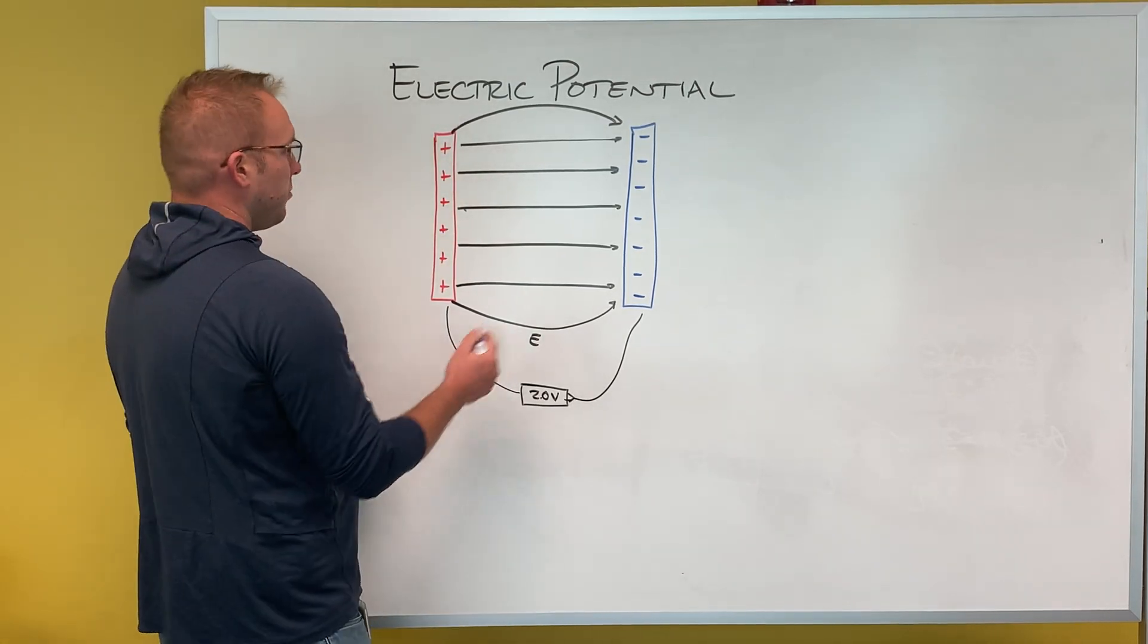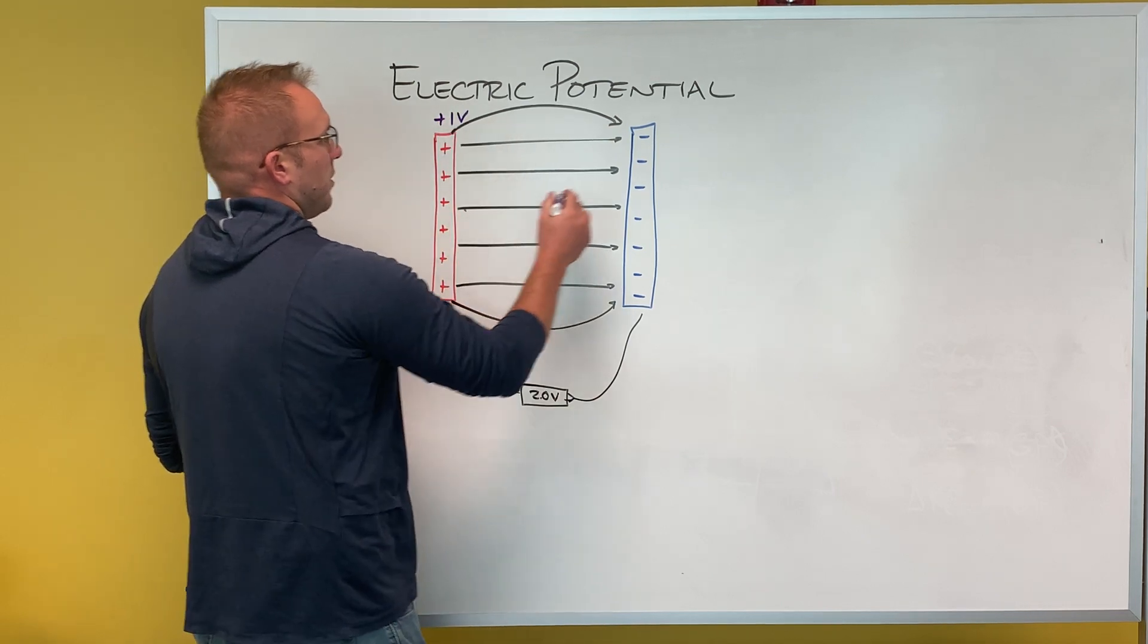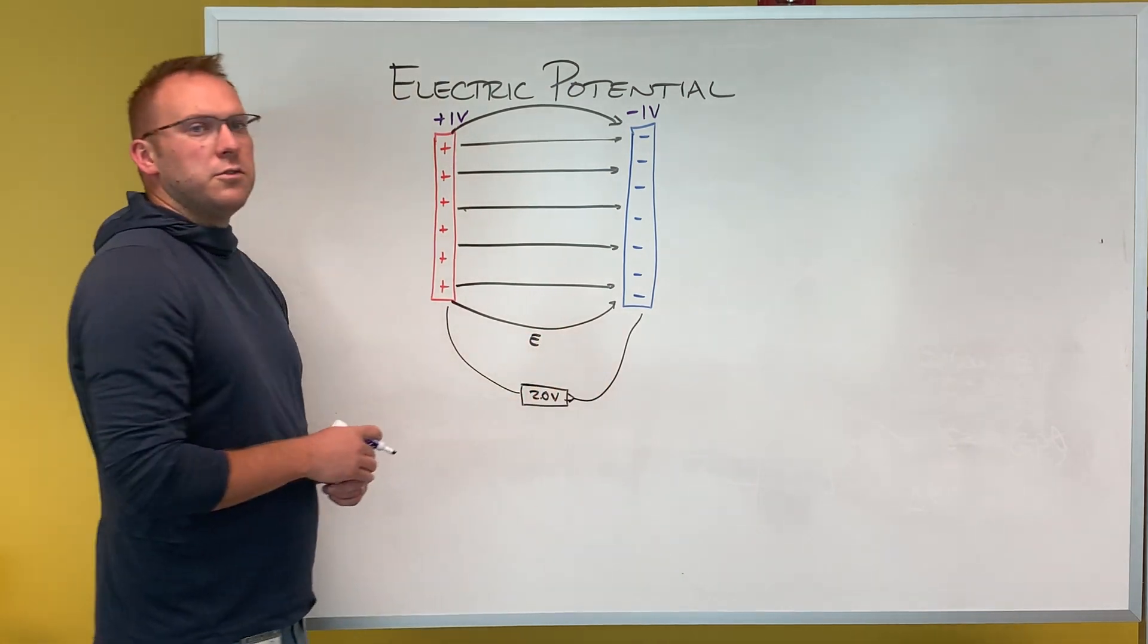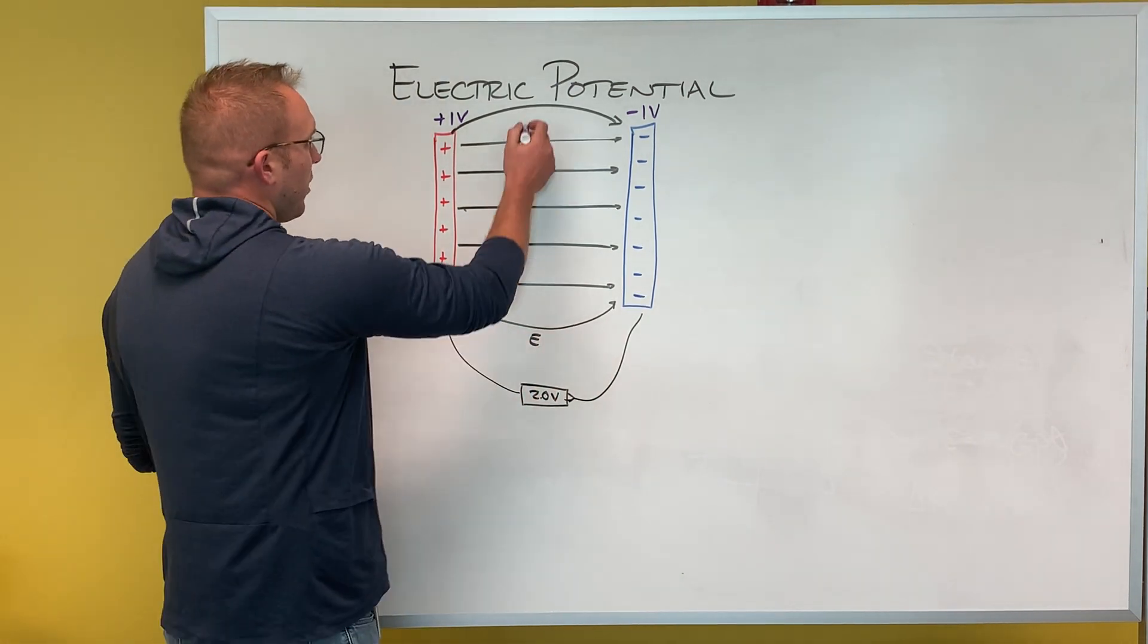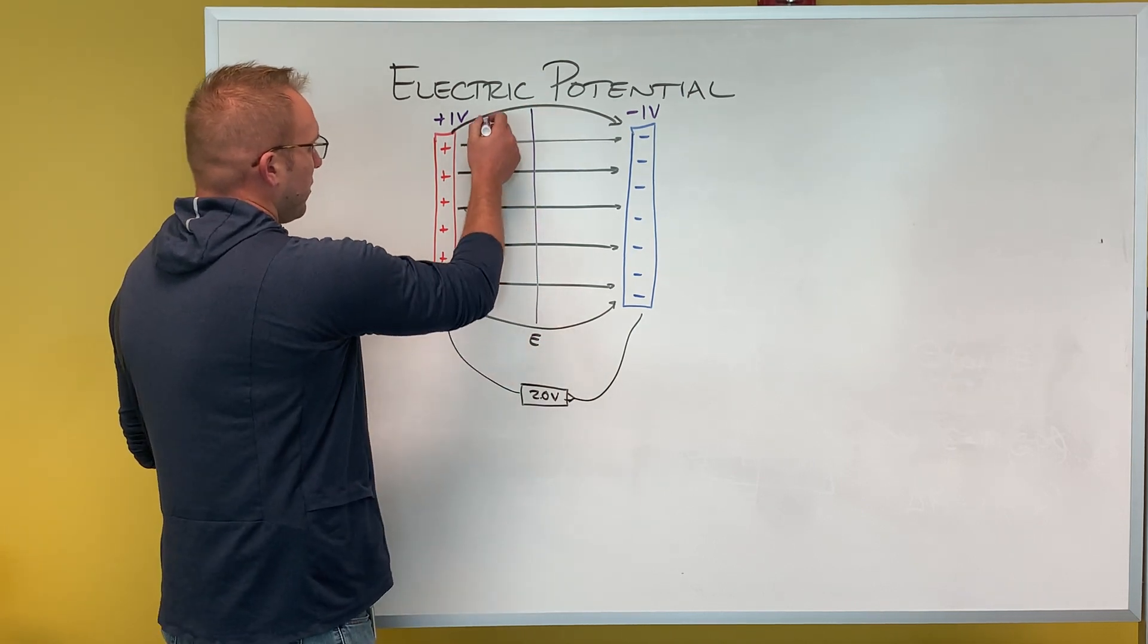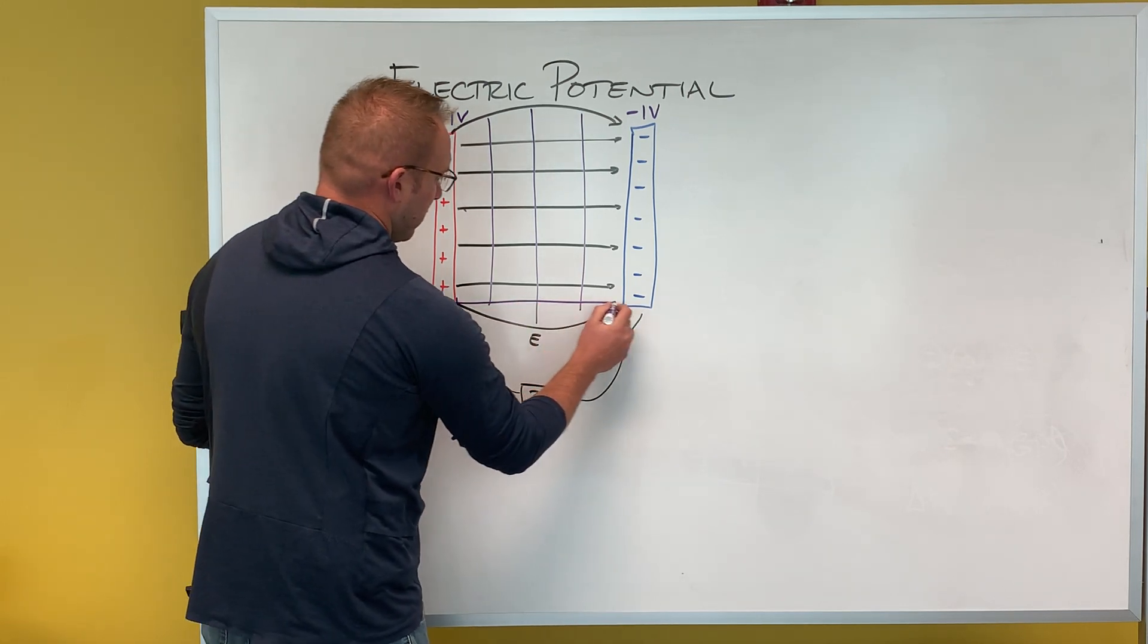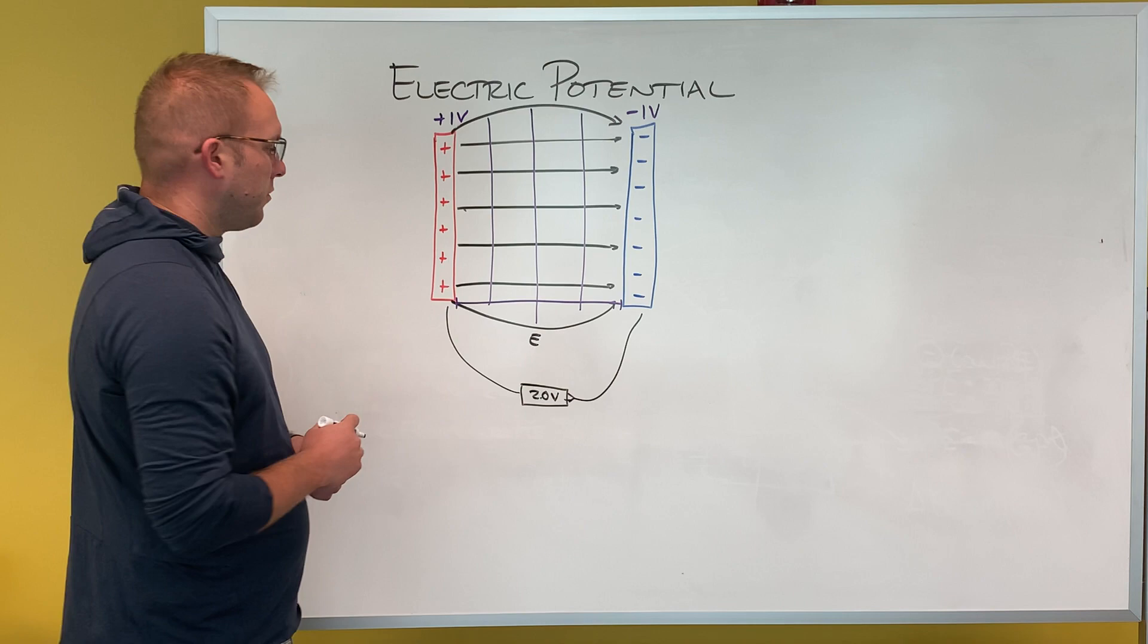Another option that could work would be if this had a voltage of positive one volt and this has a voltage of negative one volt. That's still a potential difference of two volts. And what I could do is I could find the voltage at certain positions